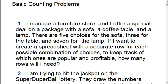So I manage a furniture store. I am offering a special deal on a package that includes a sofa, a coffee table, and a lamp all together. And I want to just get a sense of which of the choices are more profitable or sell best. And there's five choices of the sofa, three for the table and seven for the lamp. And I'd like to keep track of all the possible combinations of these guys. So like I'd like to make a spreadsheet. How big is this spreadsheet going to be?